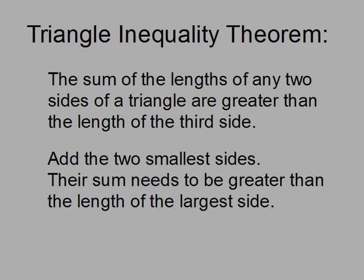When I look at this, I kind of look at it in a couple of steps. First thing: add the two smallest sides, and their sum has to be greater than the length of the largest side. The small side plus the medium side has to be bigger than the large side. If that's true, then the lengths are big enough to make a triangle. If not, then there's no triangle, and I don't have to classify it as right, acute, or obtuse.